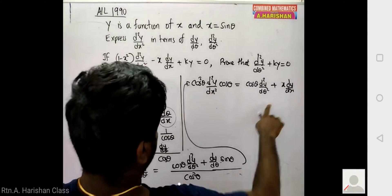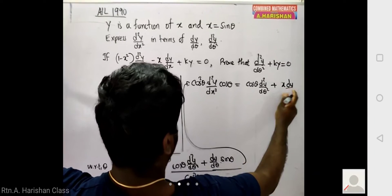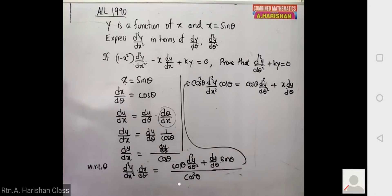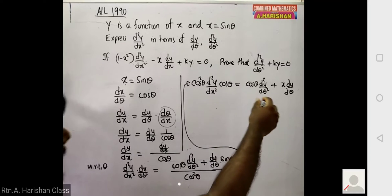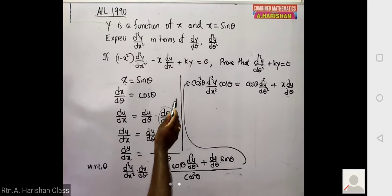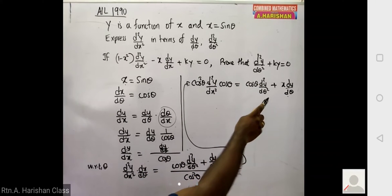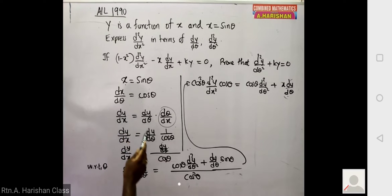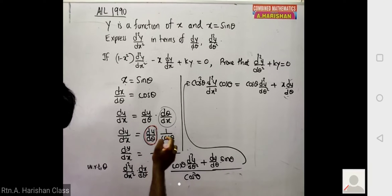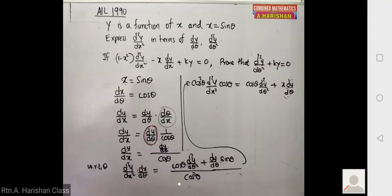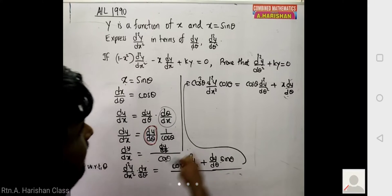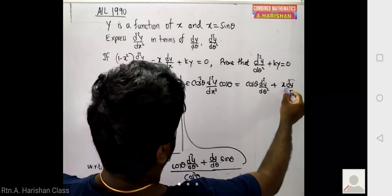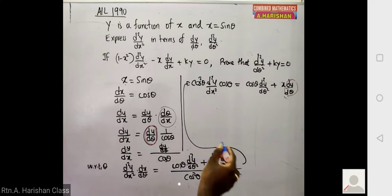There is a problem: we have x times dy/dθ, but we need dy/dx instead. Looking back, from dy/dx equals dy/dθ times 1 over cos θ, we get dy/dθ equals cos θ times dy/dx. So we substitute dy/dθ with cos θ times dy/dx.